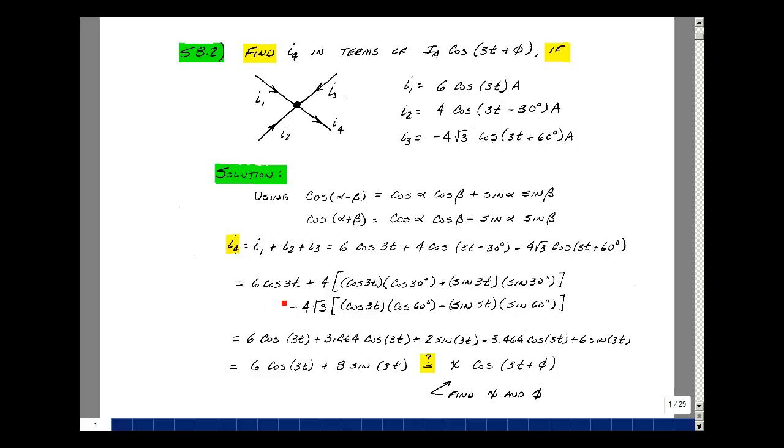The first term is 6 cosine of 3t. I've got 4 times cosine of 3t, and with the minus here it's cosine of 3t cosine of 30 plus sine of 3t sine of 30. Then minus 4 square root of 3 times cosine of 3t cosine of 60 minus sine of 3t sine of 60.